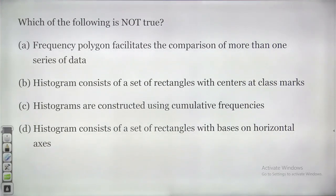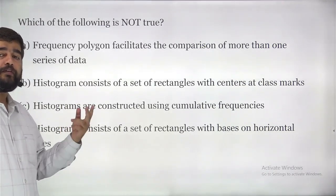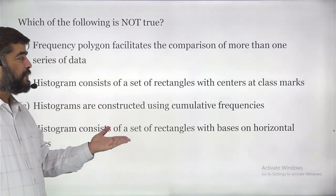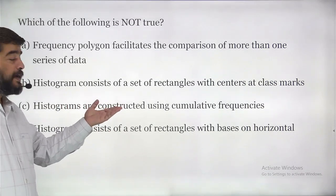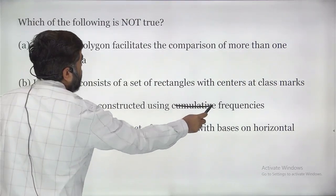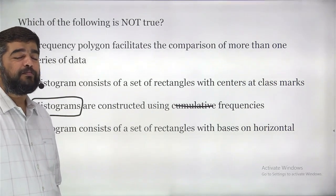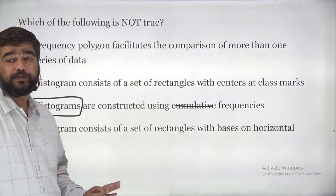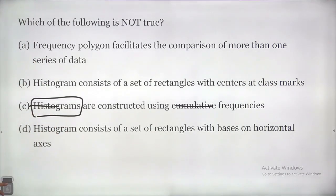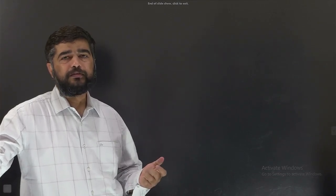Next: which of the following is not true? Frequency polygon facilitates the comparison of more than one series of data — yes, it can. Histograms consist of a set of rectangles with centers at class marks — correct. Histograms are constructed using cumulative frequency — no. They use frequencies, not cumulative frequency. Ogives use cumulative frequencies, not histograms. So this is not true — answer is C. Practice maximum questions from statistics; most are repeating and easy to solve using basic formulas. Thank you so much.